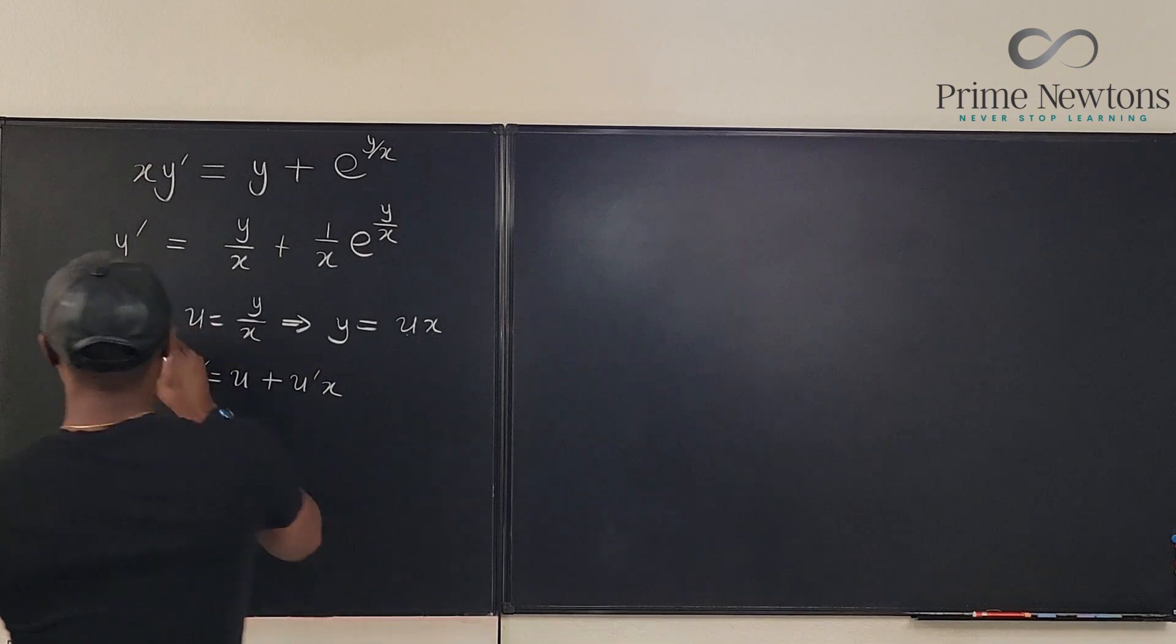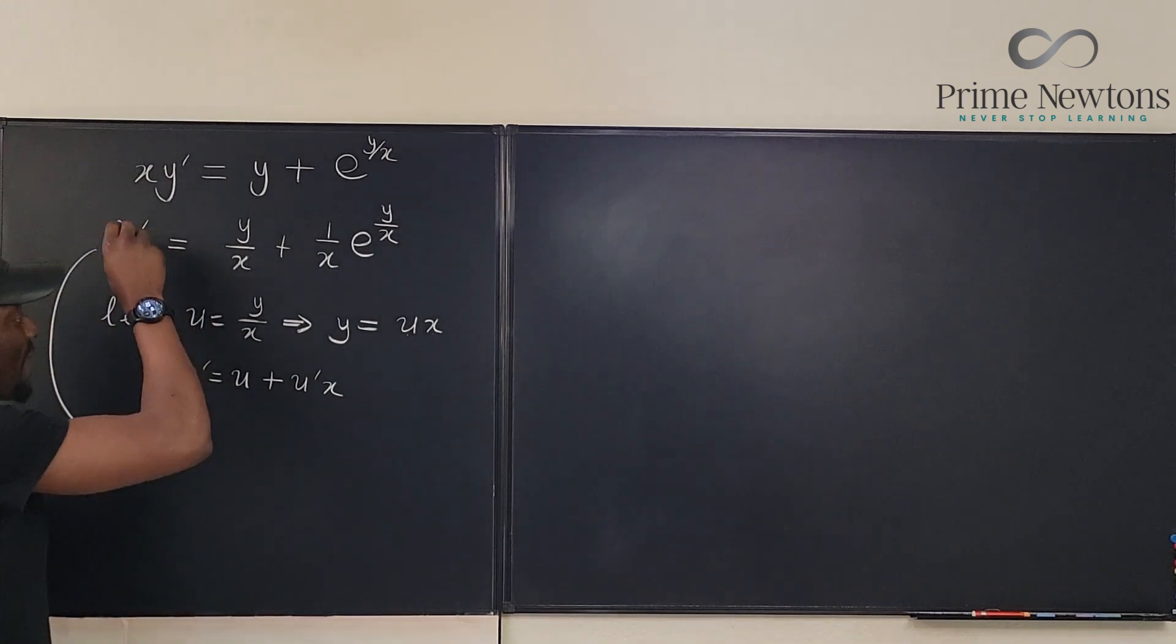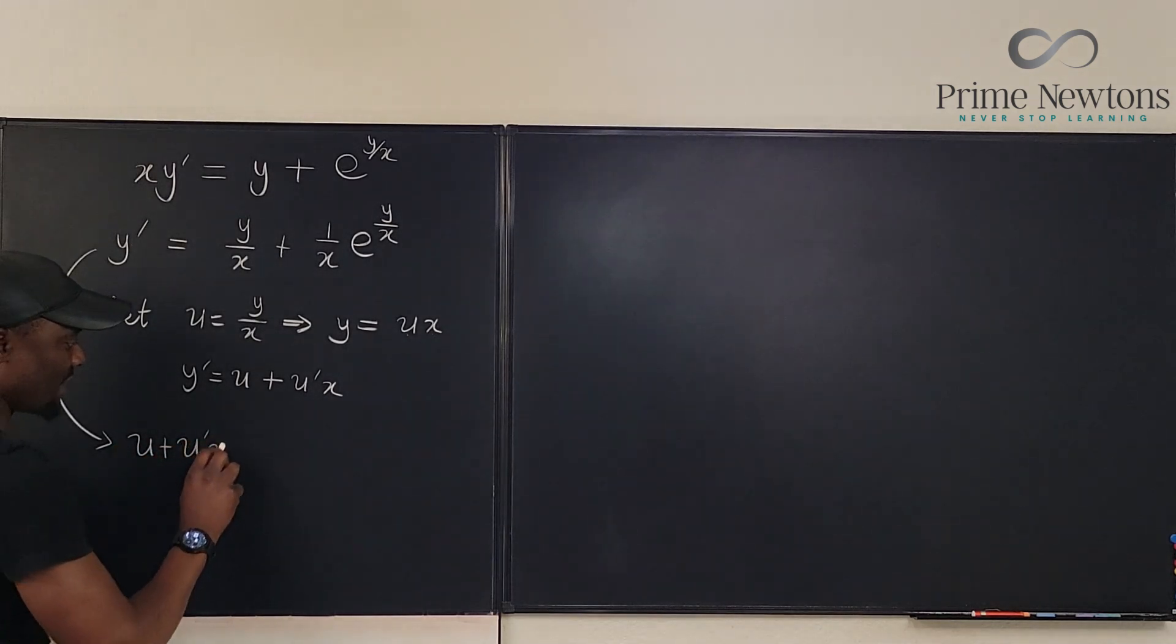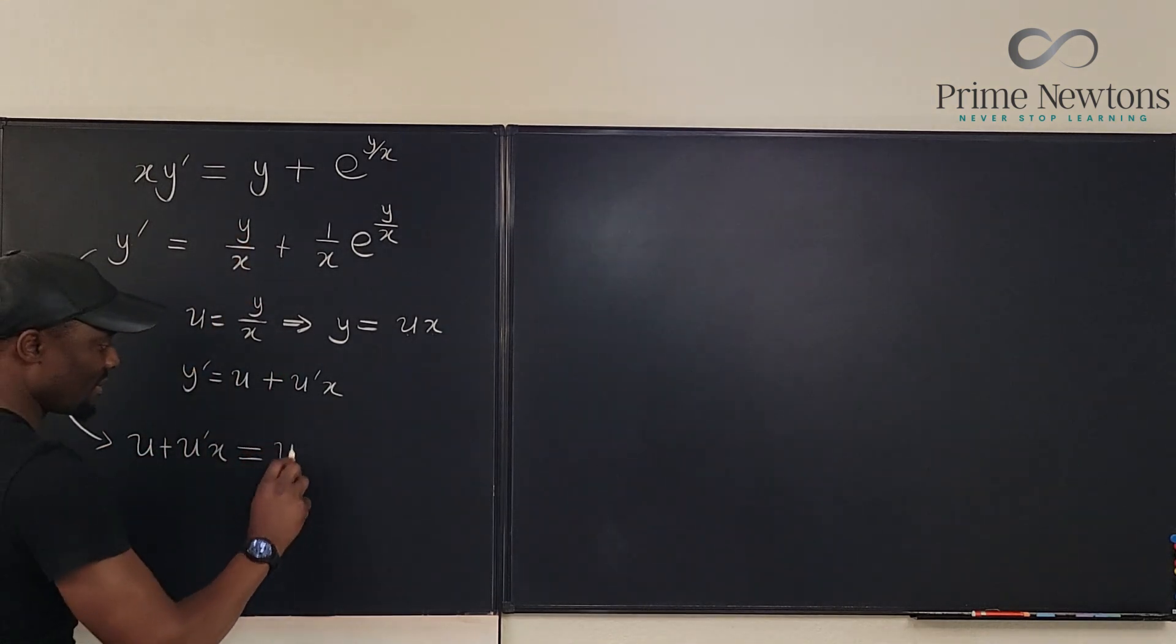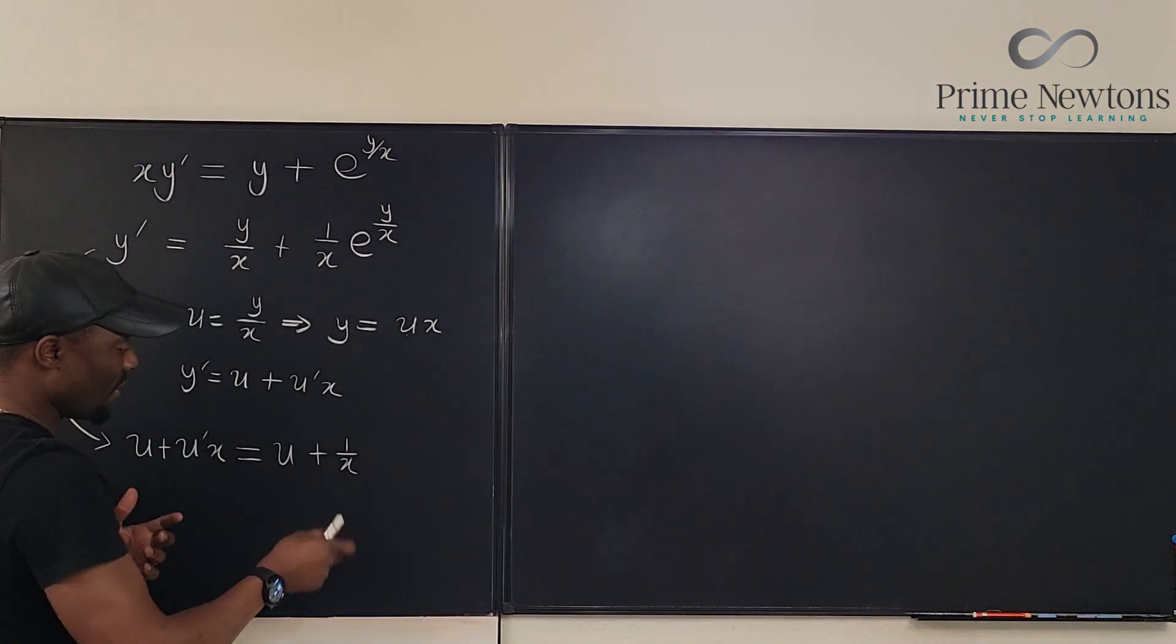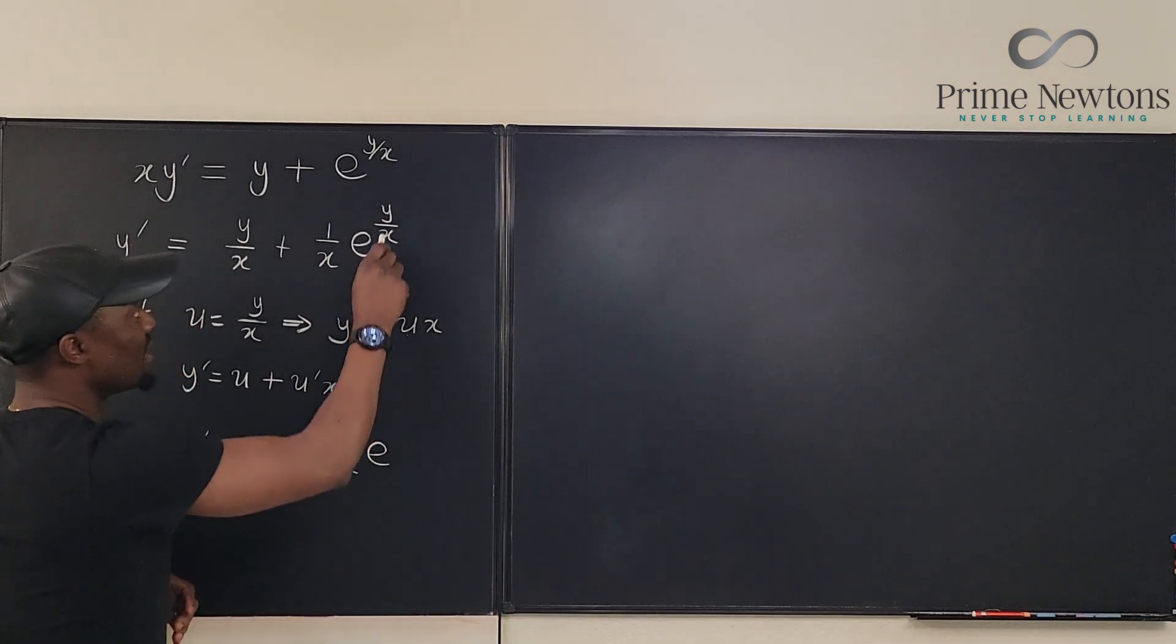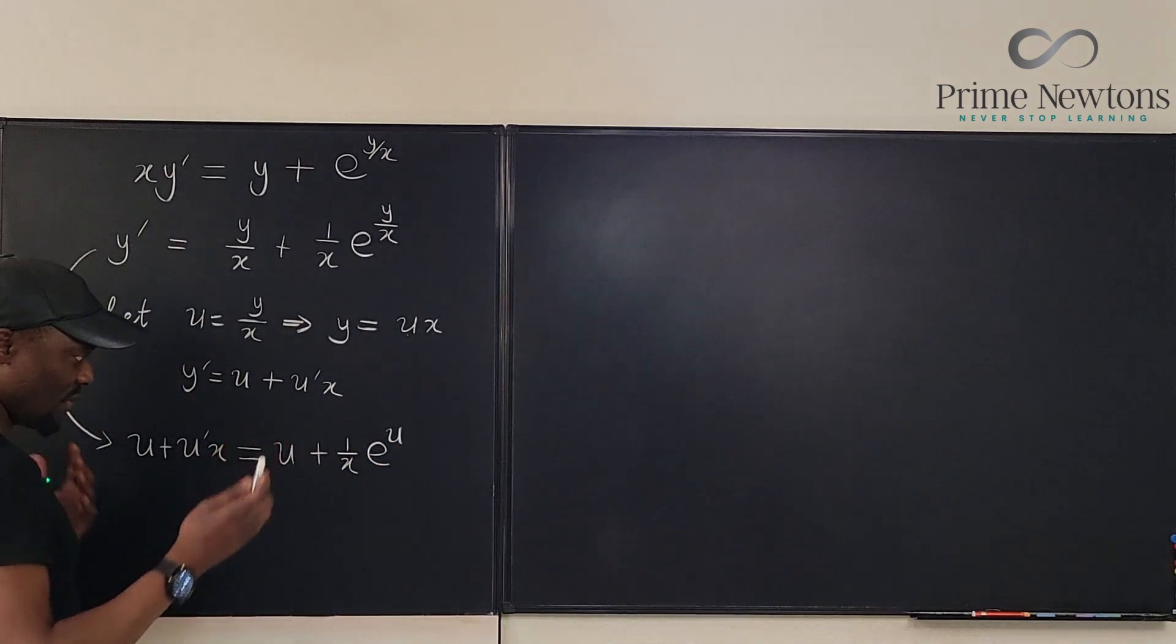So we're going to replace y prime with this part. We have u plus u prime of x. And we're going to replace this guy with u. So that's going to be one over x. And then there is no replacement for one over x, so one over x is here and then we're going to have e to the y over x which again is u. So this is what we have.